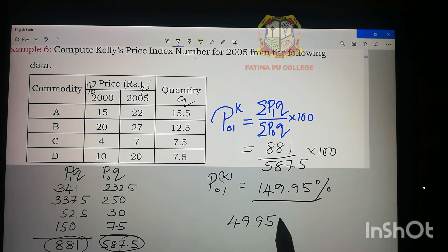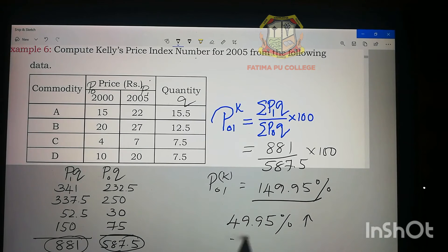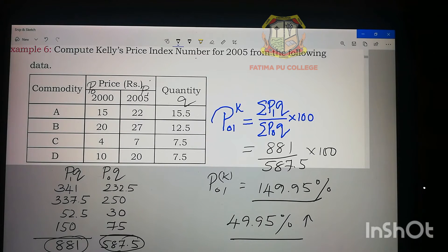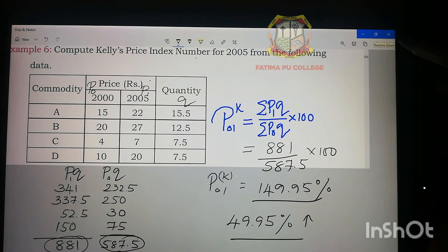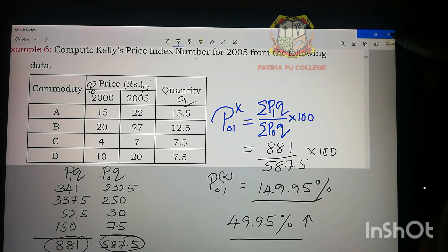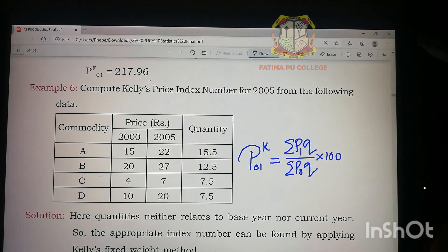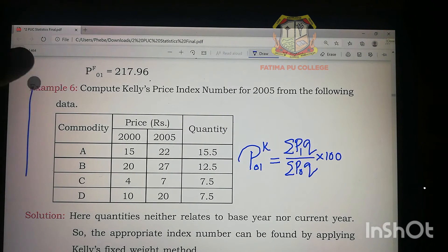Kelly's index number is 149.95. Since it is 49.95 more than 100, we can say there is a 49.95% increase. This is how we solve the problem of Kelly's price index number. I hope you followed this — if not, you can rewind and watch the video again.